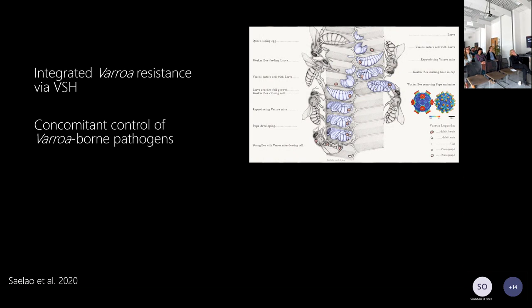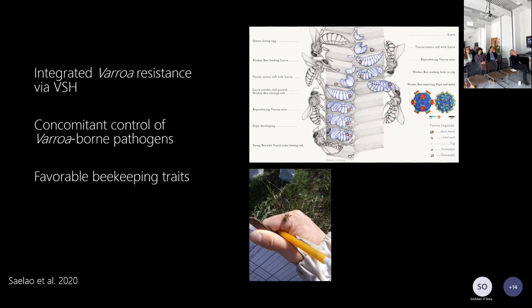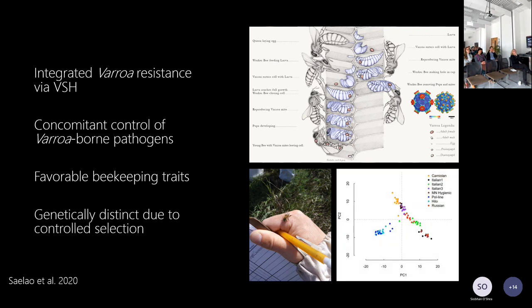The other part of the puzzle is that these bees have nice beekeeping traits — they're docile, so they're nice bees to work with. They're also genetically distinct from many other stocks used for breeding, which is a really important point. The PCA analysis here shows the genetic cluster for pol-line bees and their derivative stock known as helo bees is quite far from all the other stocks. This shows that while the breeding programme has been very effective at producing something new, it also means they won't lose all of their traits from a single generation of outcrossing.